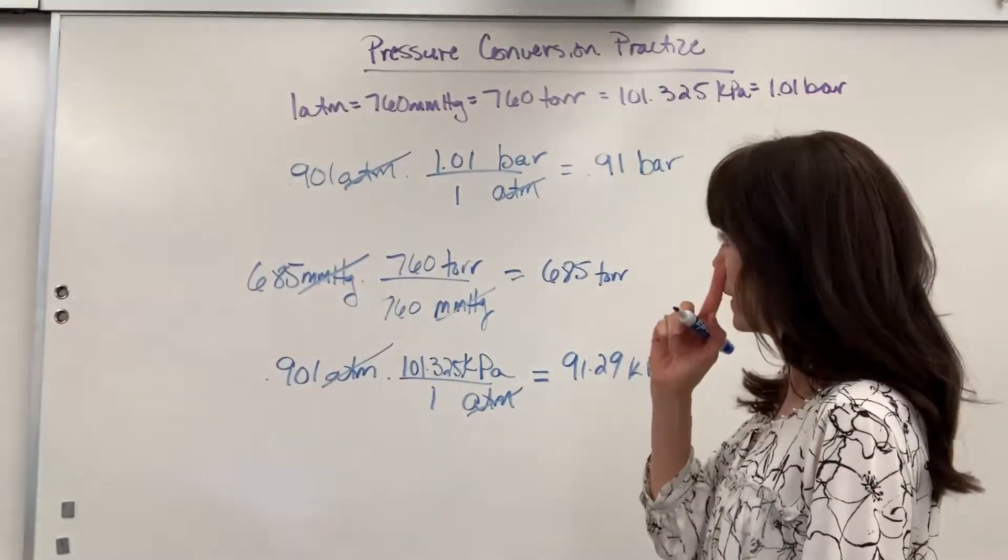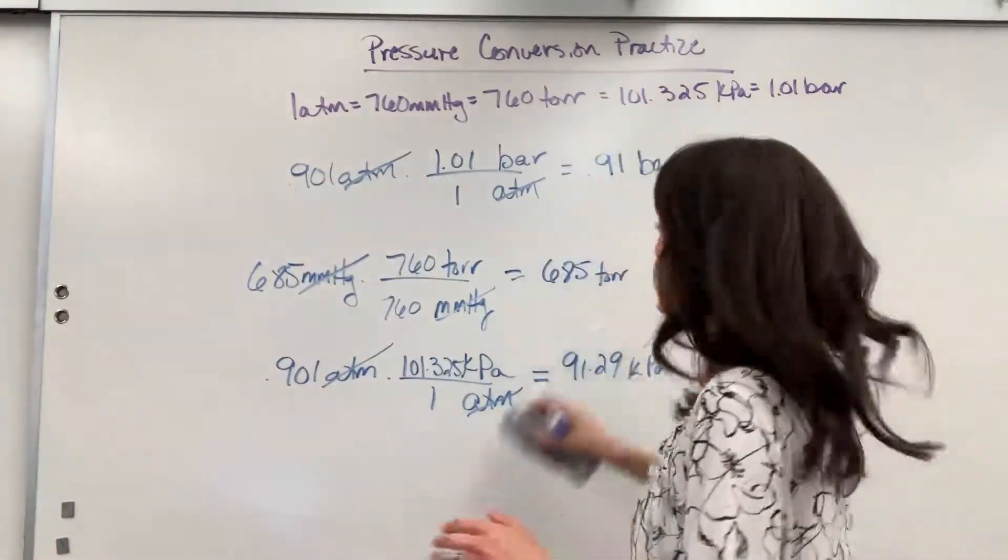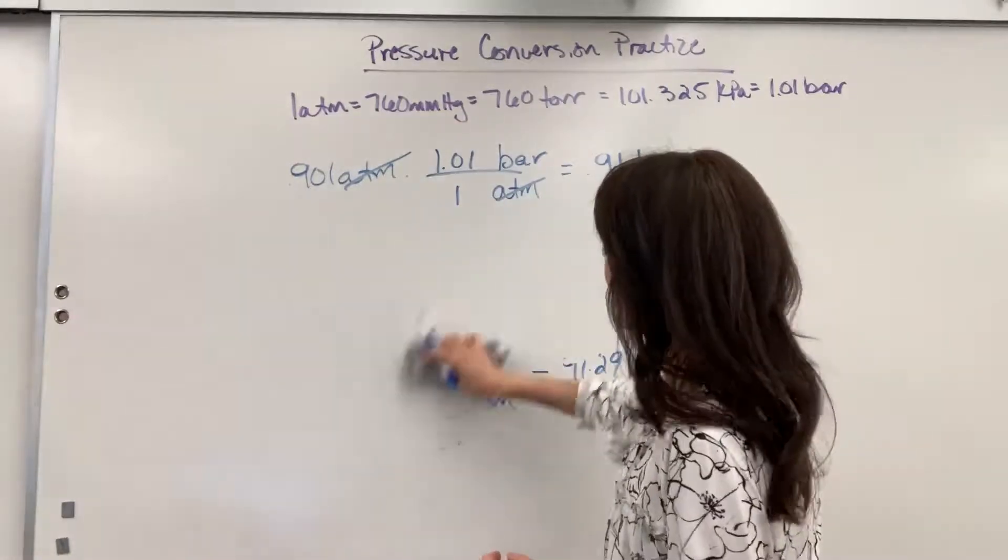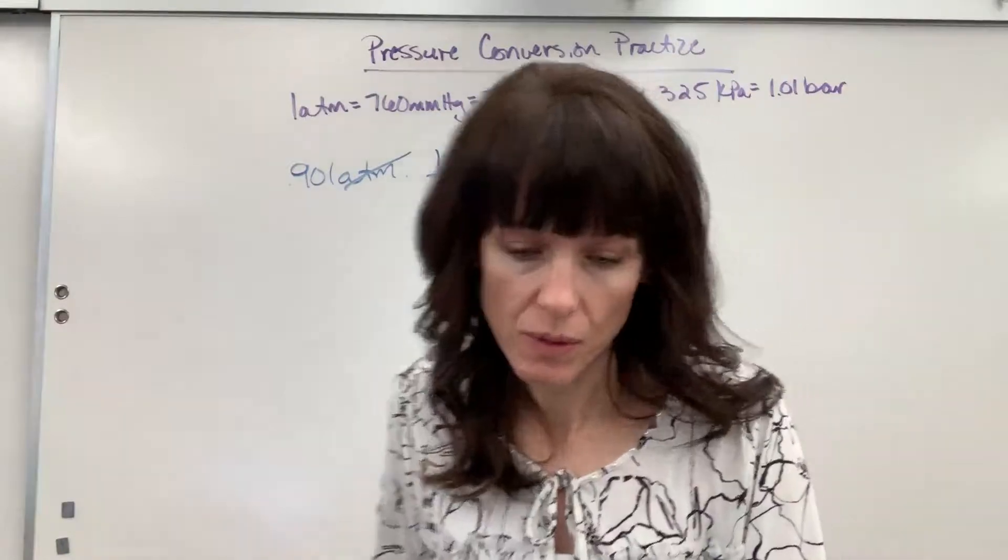Let's, for fun, go from millimeters of mercury to ATM. This is a common conversion, especially when you're doing the ideal gas law. You'll be given millimeters of mercury, but you have to have ATM.